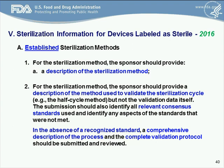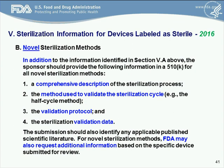Taking a look at the novel methods — you'll notice right off, this is in addition to all of the information documented in Section 5. We want to see that information, but in addition, we're looking for a comprehensive description of the sterilization process, the method used to validate the sterilization cycle, the validation protocol, as well as the validation data for the process. FDA may also request additional information based on the specific device submitted for review.